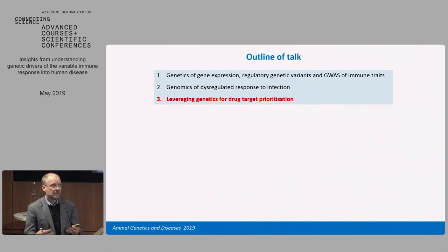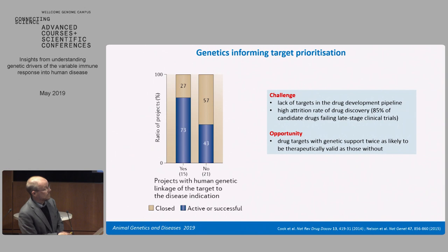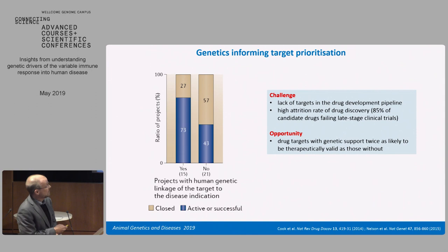In the last part of the talk, I'll share some unpublished data on how we've tried to bring together different ways of functionally annotating these genetic variants to leverage them as much as possible in terms of potential therapeutic targets. There's a big problem in drug development with a lack of targets coming through and a very high attrition rate, particularly in late-stage clinical trials with up to 85% of drugs failing. A number of studies have shown that if you have some evidence of genetic support for a target at the outset, that increases your chance of successful progression down the drug development pathway. Drug targets with genetic support are probably about twice as likely to be therapeutically valid as those without, as highlighted by the work of Nelson and others.